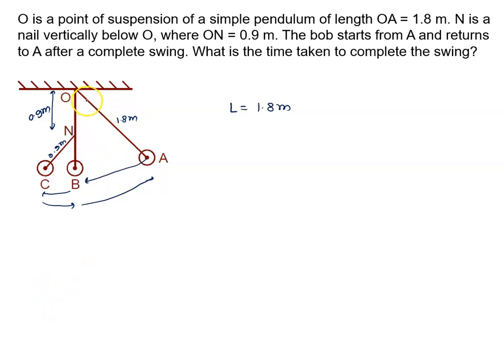So first I'll write the time period for 1.8 meters. T equals 2π root L by g, where L is 1.8. Now look, from A to B and B to A, this will be T by 4 plus T by 4, which equals T by 2.